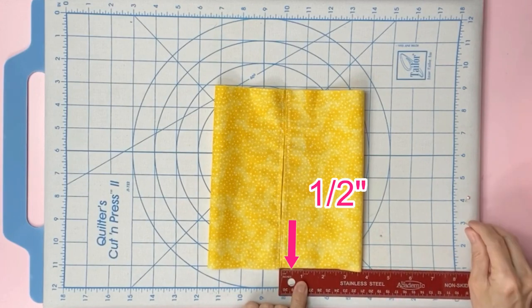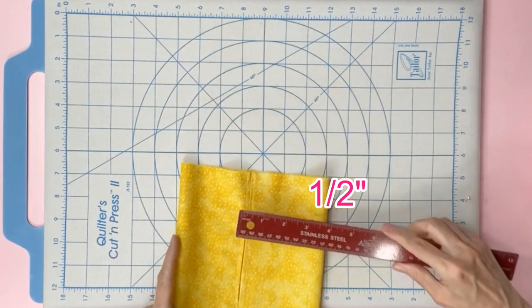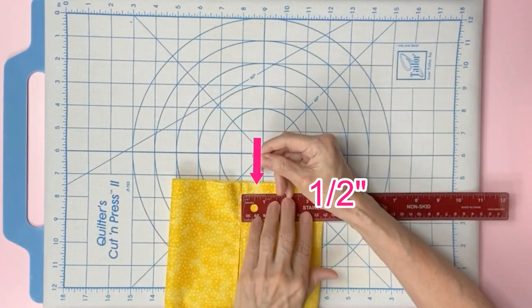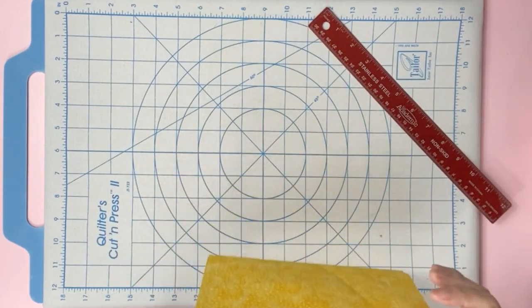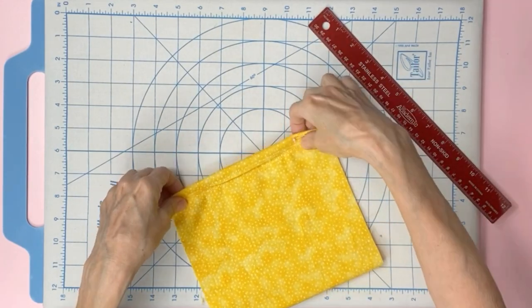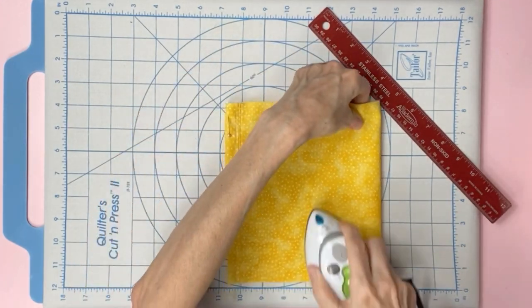Next, grab your ruler and mark half an inch from the seam on each side. This is where we will fold it just like this. Grab your iron and press.